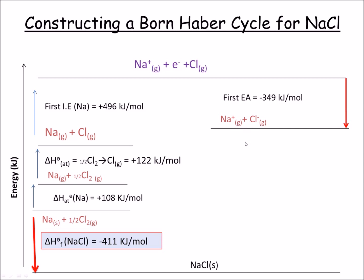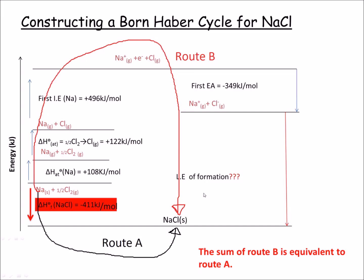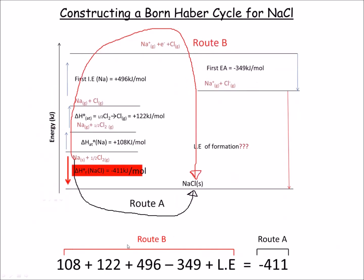If the ions combine, we get the lattice enthalpy of formation — except we don't know this value, so we have to calculate it from all the values given. To calculate the lattice enthalpy of formation for sodium chloride, we need to understand there are two ways of getting to sodium chloride from this cycle. Route A involves the standard enthalpy of formation, which is minus 411 kJ/mol. Route B takes into account all the intermediate steps. The energy change in Route B is equivalent to the energy change in Route A.